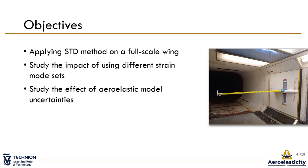The current study applies the shape sensing method on the A3TB wind tunnel model. This model is a full-scale version of the A3TB platform and aeroelastic demonstrator. See the paper for full details. Additional objectives include studying the impact of using different strain mode sets or different aeroelastic models. The test was conducted at the University of Michigan involving research groups from Michigan University, Ohio State University, and the Technion Israeli Institute of Technology.